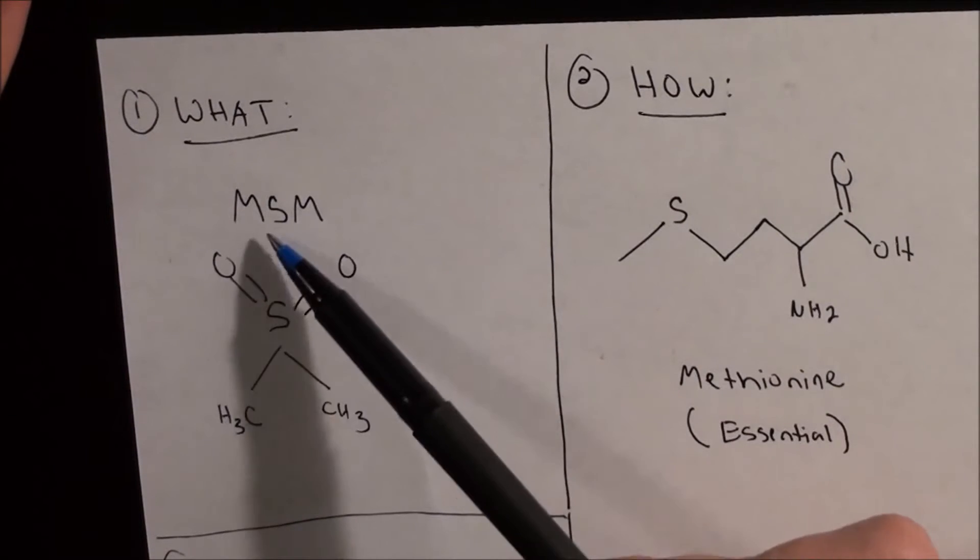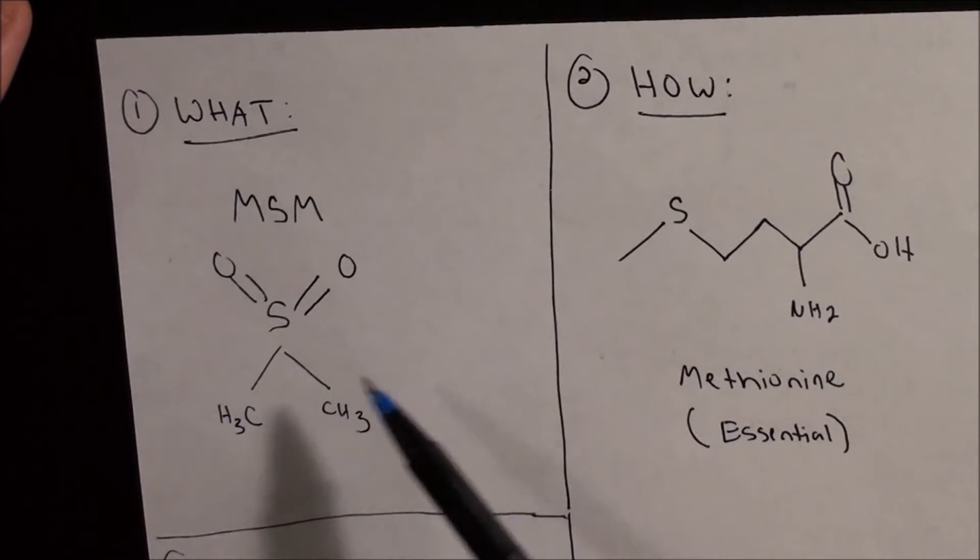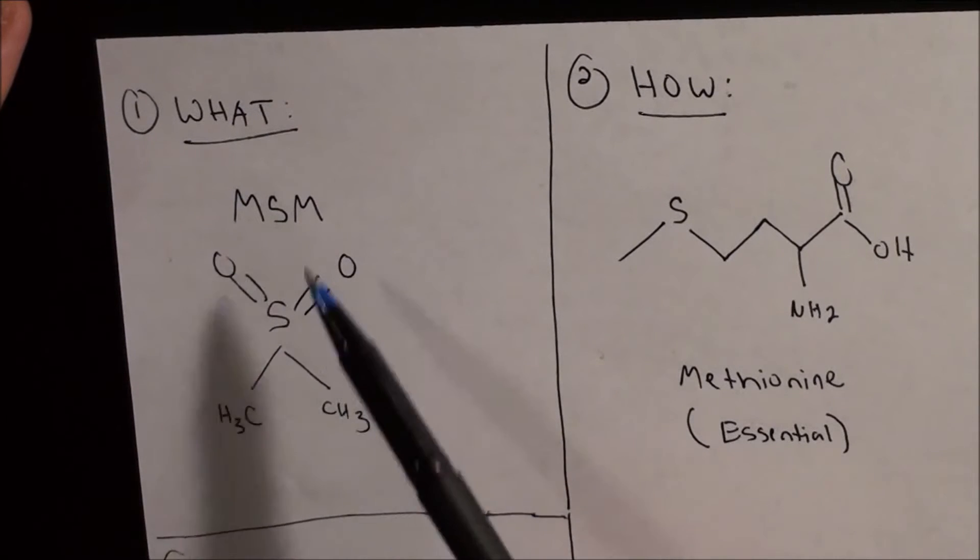Here is the MSM molecule, methyl sulfonyl methane. What's key about this molecule is right here in the middle - it's a sulfur group, a sulfur atom surrounded by methyl groups and oxygen groups.